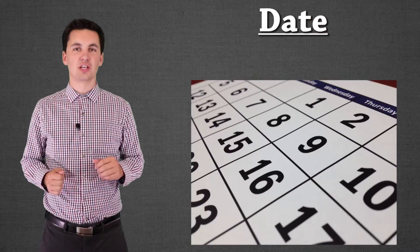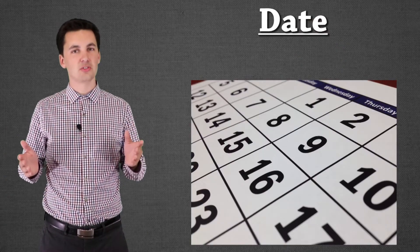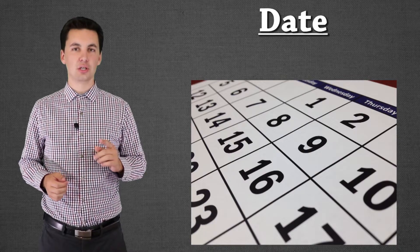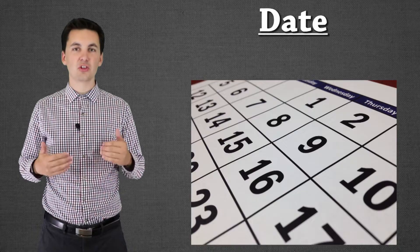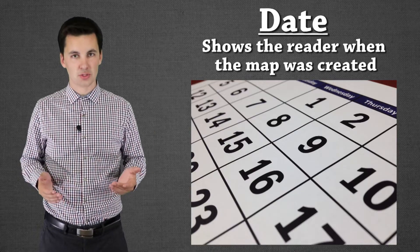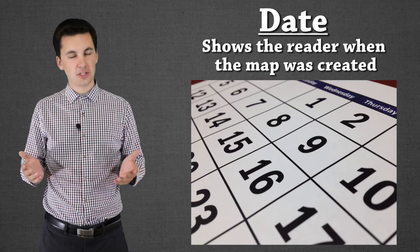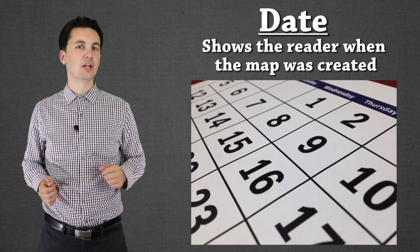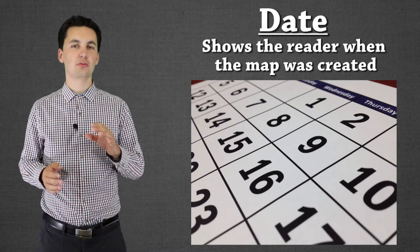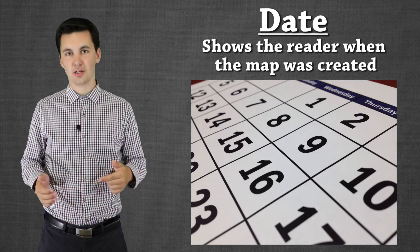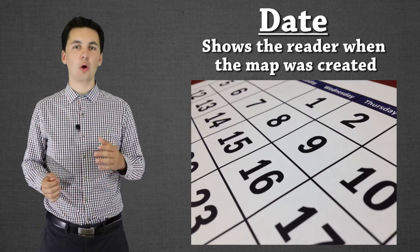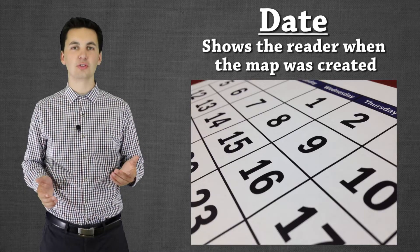The next part of TODALS is the date. This one seems kind of simple but this is really important. The date's important because this lets us know when the map was produced. Over time things change. If you were looking at a map of the United States it would look very different if we were looking at the 1700s instead of current day. It would be important to know when that map was produced so you know how up-to-date and current it is.